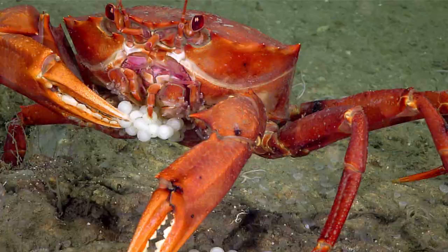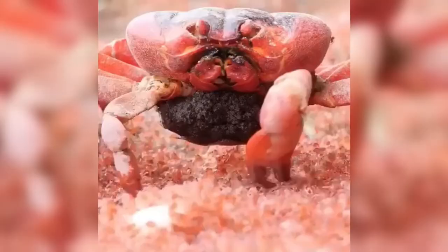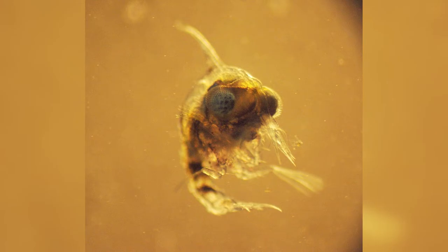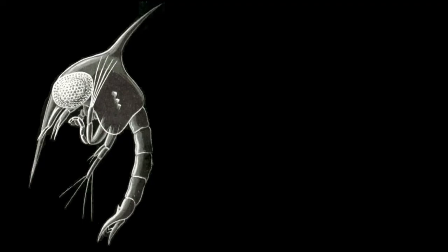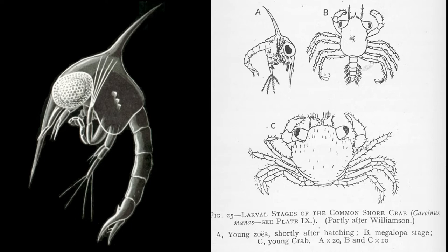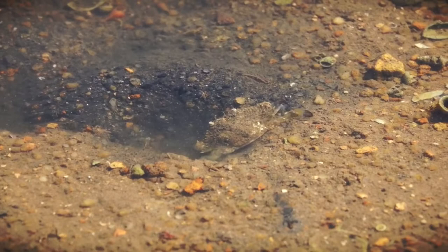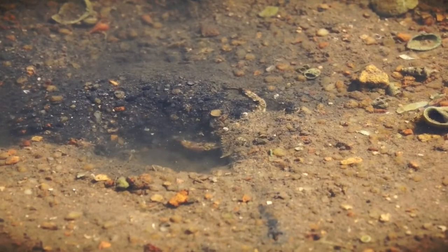When development is complete, the female releases the newly hatched larvae into the water, where they are part of the plankton. Each species has a particular number of zoeal stages, separated by molts, before they change into a megalopa stage, which resembles an adult crab except for having the abdomen or tail sticking out behind. The last molt, from megalopa to juvenile, is critical, and it must take place in a habitat that is suitable for the juvenile to survive.